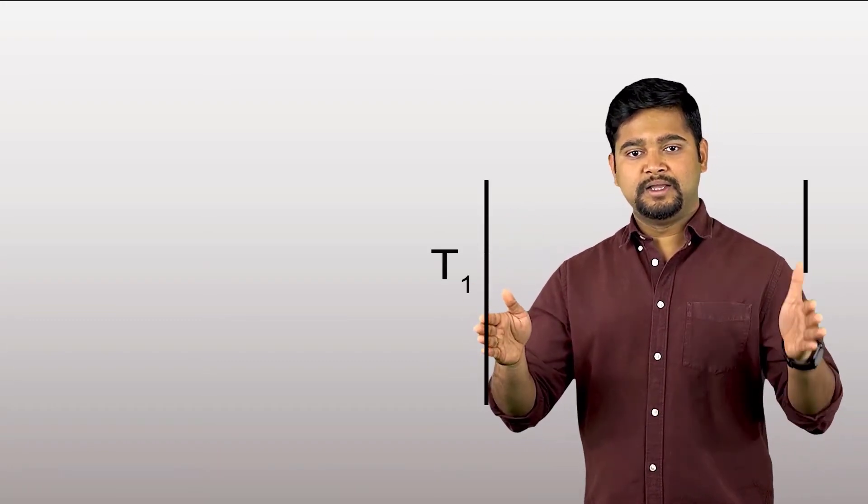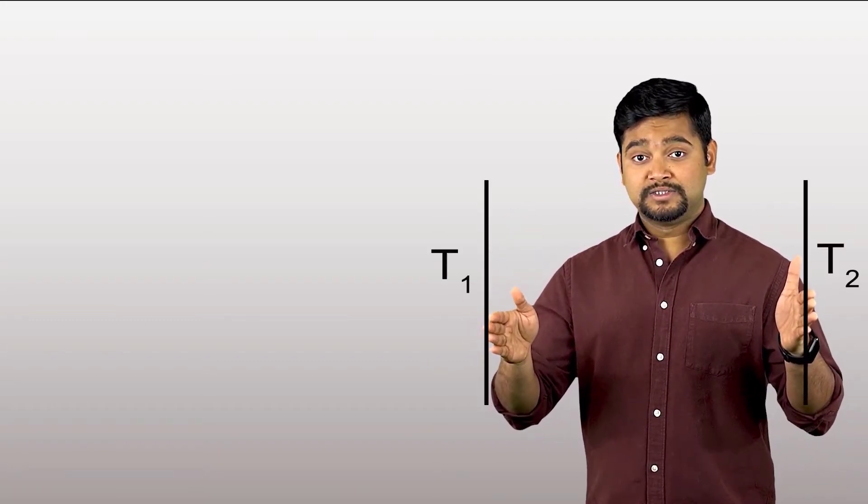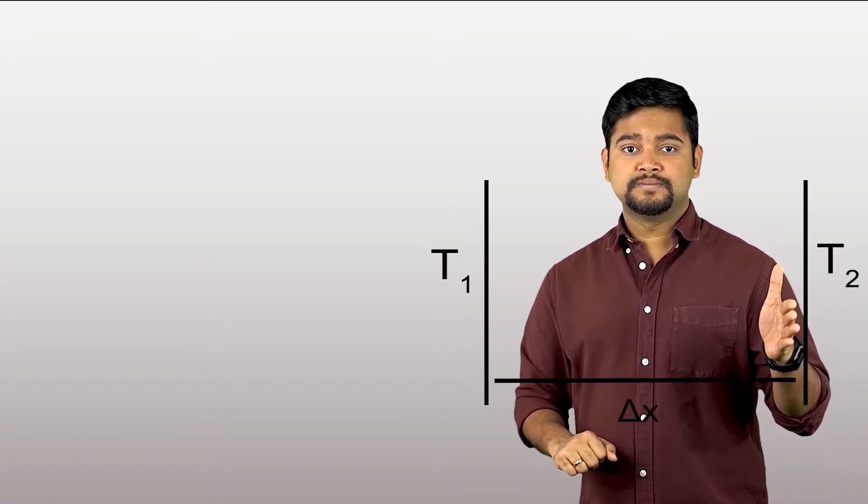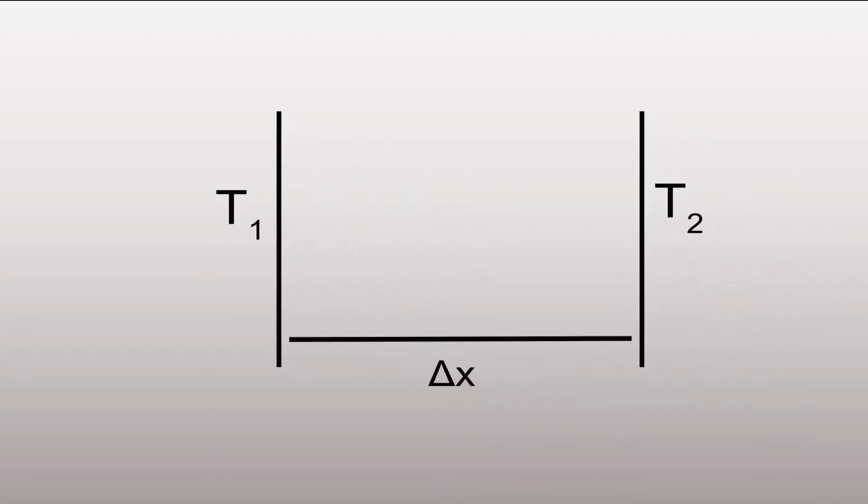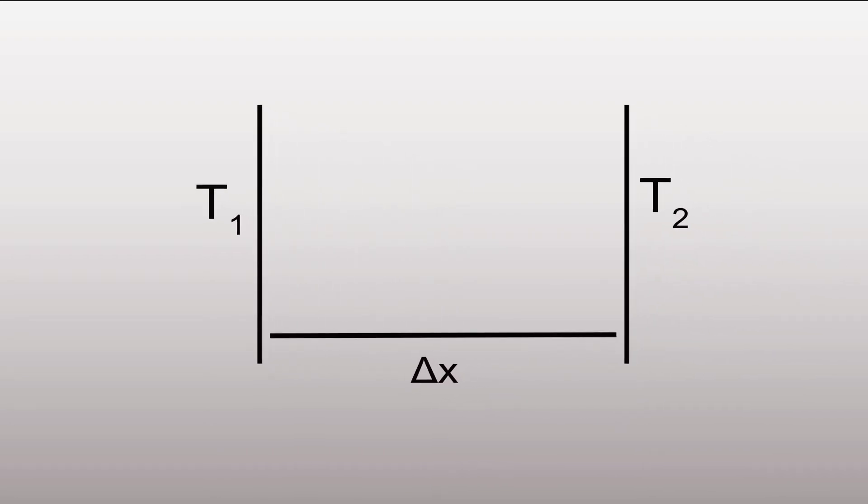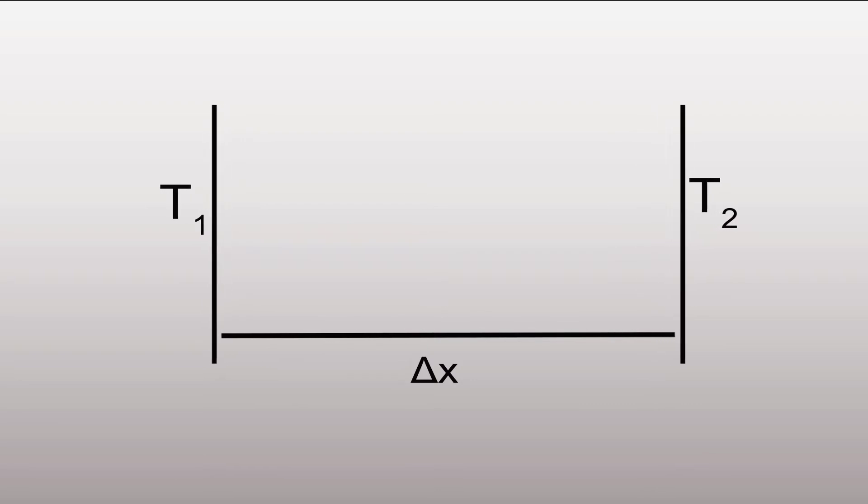Consider a one-dimensional wall, which has two surfaces being maintained at T1 and T2, and a distance delta x apart. Fourier observed that the heat transfer was from the hotter side to the colder side, and it was higher when the temperature difference was higher. On the other hand, if the distance between the two sides was large, or in other words, if the wall was thick, the heat transfer was lower.